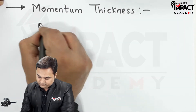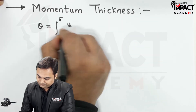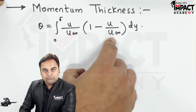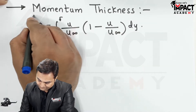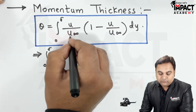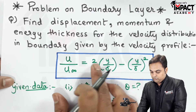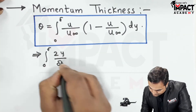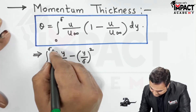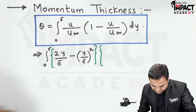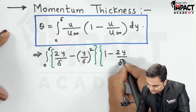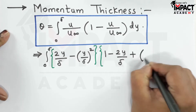Next, I will find momentum thickness. The formula is: theta equals integration from 0 to delta of (u/u∞)(1 minus u/u∞) dy. Substituting u/u∞ = 2y/δ minus (y/δ)², we get: (2y/δ minus (y/δ)²) times (1 minus 2y/δ plus (y/δ)²) dy.